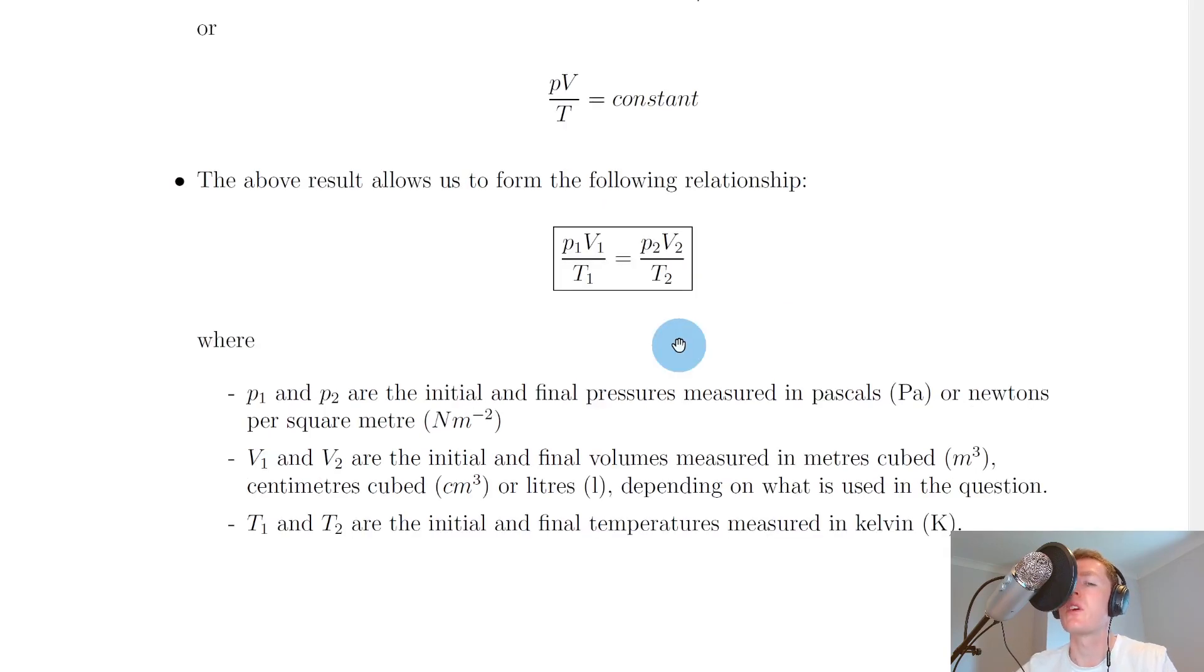So let's say you're given a question where you're told the initial pressure, the initial volume and the initial temperature of a gas, and then you know the final volume and the final temperature, then you could be asked to find the final pressure P2 of that gas. And you would know all the other variables to plug them in here and find P2 on its own. But remember, temperature must be in Kelvin for this equation to hold.